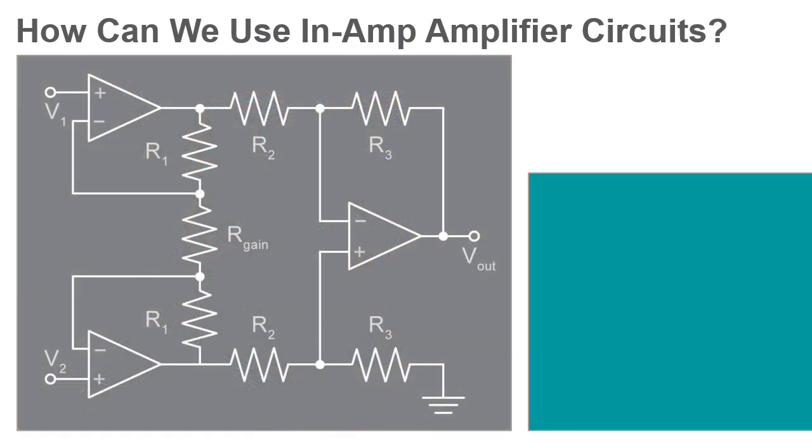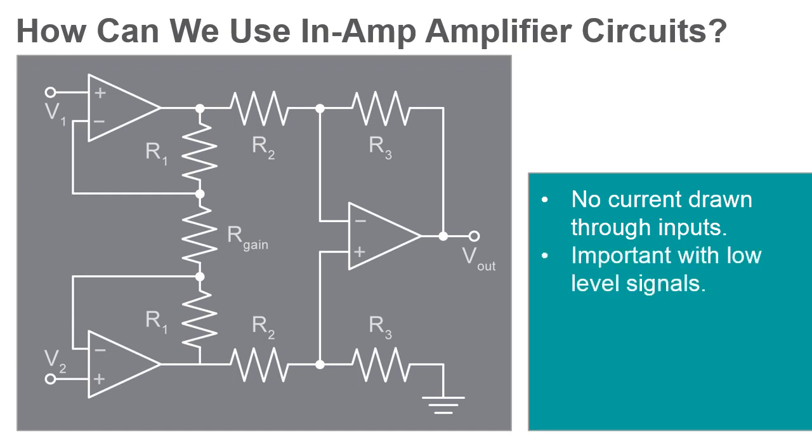Another advantage to the in-amps high input impedance is that almost no current is drawn through the amplifier inputs. This prevents the amplifier from affecting the signal voltage regardless of what the source impedance is. This is especially important when working with low-level signals.